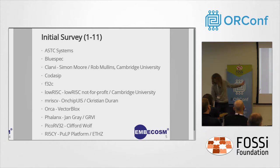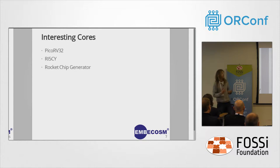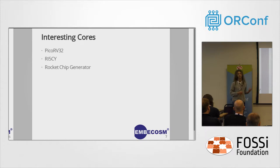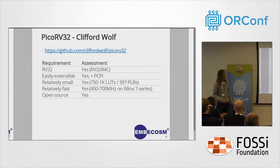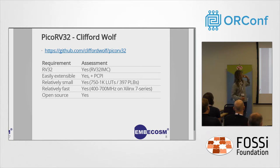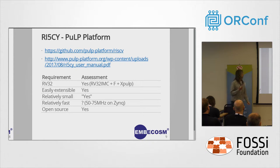There are quite a lot of open source RISC-V cores out there now — at least 20 are easy to find. The three that were actually interesting in terms of our requirements were Clifford Wolf's PicoRV32, the RISC-V core from the PULP project, and the Rocket Chip Generator. PicoRV32 pretty much fits all of those requirements, so there's no need to discuss it in too much detail.